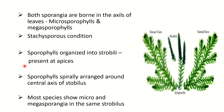Sporangia are organized into strobili at the apical end — strobili (singular: strobulus) are present at the apical end, not the basal part. Sporophylls are spirally arranged around the central axis of the strobulus, creating a crisscross arrangement. Most species show both micro and megasporangia in the same strobulus.